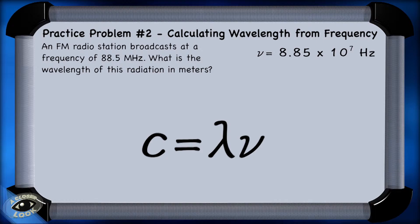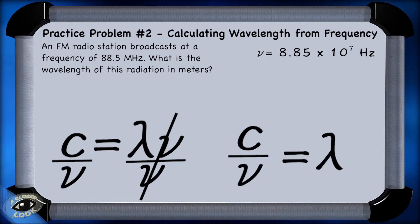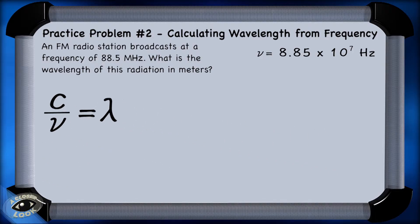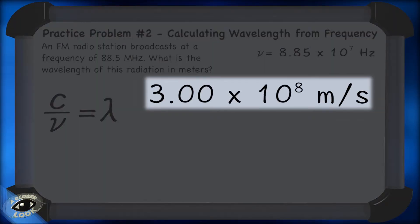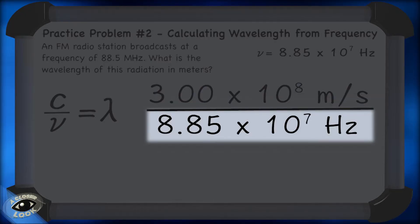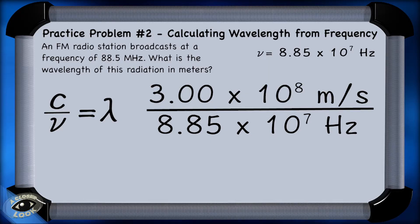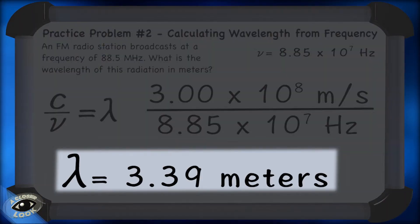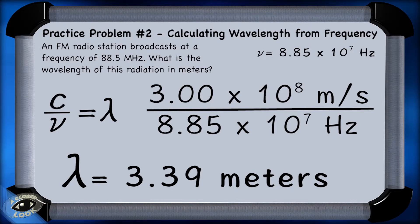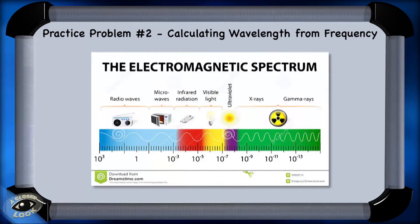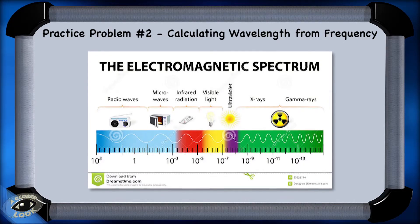Since we're solving for wavelength, we'll rearrange the equation by dividing both sides by the frequency, getting wavelength by itself. We plug in the speed of light — 3.00 times 10 to the eighth meters per second — into the numerator, and 8.85 times 10 to the seventh hertz into the denominator. We find that the wavelength of the FM signal is 3.39 meters, since the units of per second cancel out. This is a pretty long wavelength, and it's this long wavelength with a very small frequency that makes this type of radiation safe.